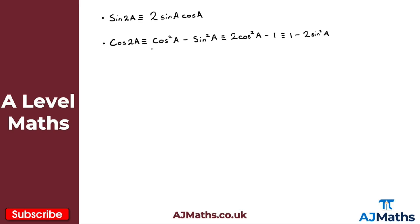So the double angle formula for cosine of 2a is quite versatile — we can express it in a number of different ways. And then finally, the double angle formula for tangent: tan of 2a can be expressed as 2 tan a divided by 1 minus tan²a.